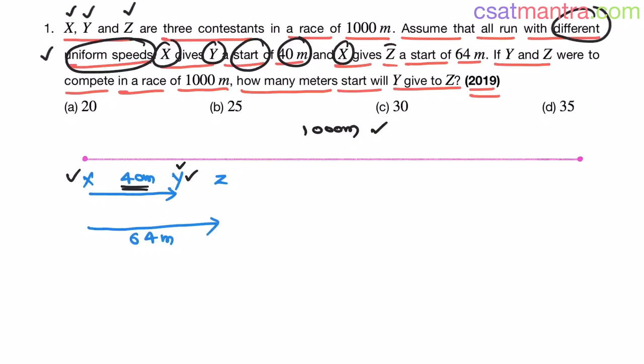Similarly X gives Z a start of 64 meters. Z is 64 meters ahead of X when they are about to start. Now from this tell me how much start Y gives to Z? This distance - that is 64 minus 40, that equals 24 meters.